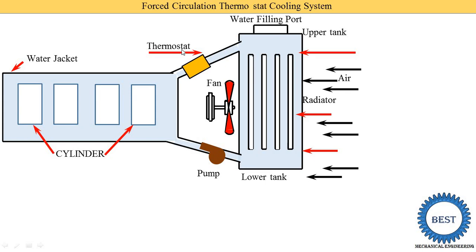The thermostat regulates water flow according to thermal conditions. When the water jacket temperature reaches a set value — say 85°C — the thermostat opens and water is supplied to the radiator. Below 85°C, the thermostat is closed and water only circulates within the water jacket, not through the radiator.